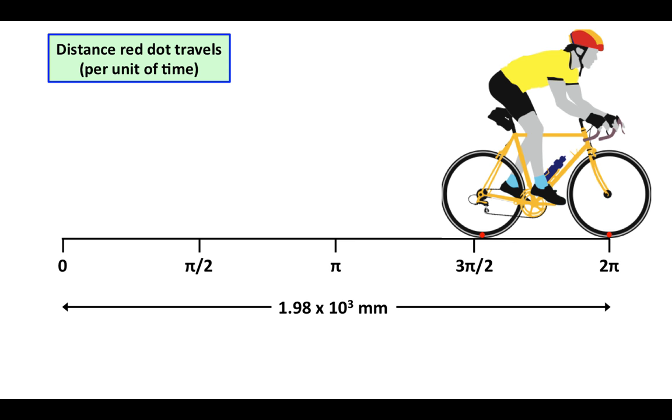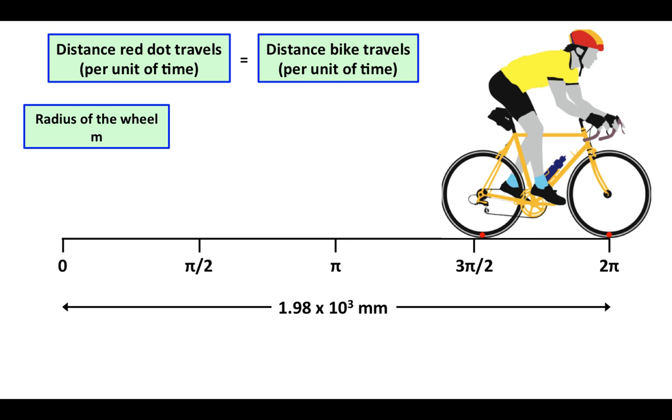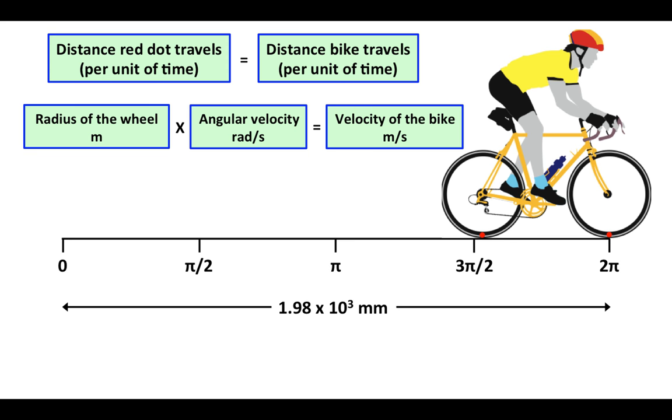The distance that the red dot travels per unit of time is equal to the distance that the bike travels per unit of time. The radius of the wheel in meters times the angular velocity in radians per second is equal to the velocity of the bike in meters per second.